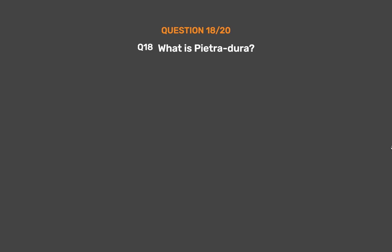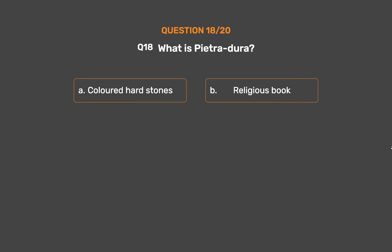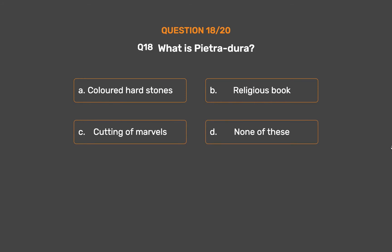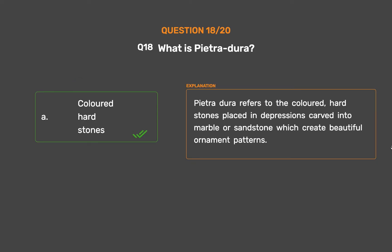Question No. 18: What is Pietradura? Option A: Colored hard stones. Option B: Religious book. Option C: Cutting of marbles. Option D: None of these. The correct answer is Option A: Colored hard stones. Pietradura refers to colored hard stones placed in depressions carved into marble or sandstone, which create beautiful ornamental patterns.